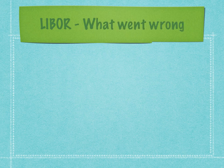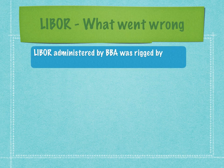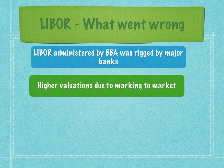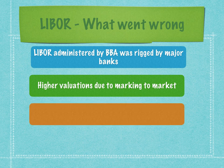Following the global financial crisis of 2008, LIBOR administered by the BBA was rigged by major banks. Because large banks had taken a bad hit during the 2007-2008 financial crisis and were showing very reduced profits, they wanted to turn the curve — they wanted to show those reduced profits as higher profits. So what they did was start valuing all their outstanding contracts at lower LIBOR, which led to higher valuations because of marking to market.